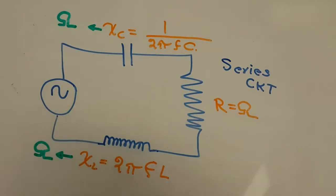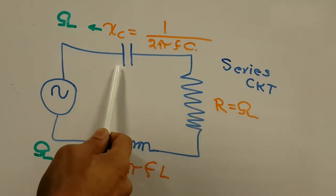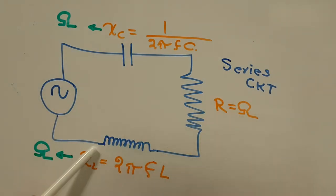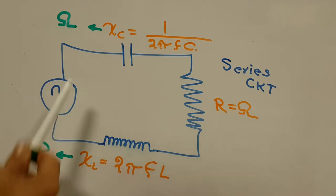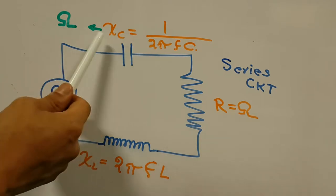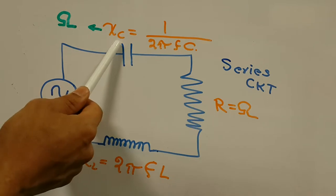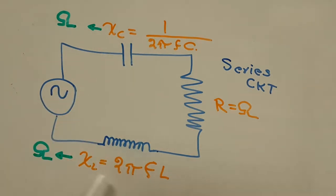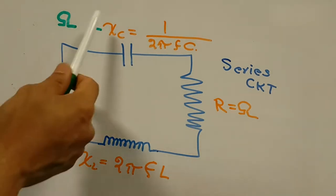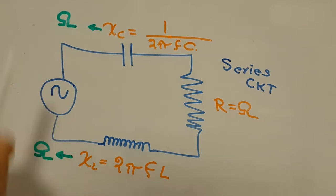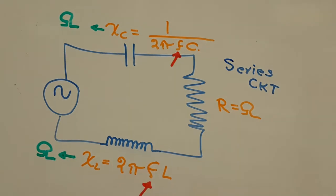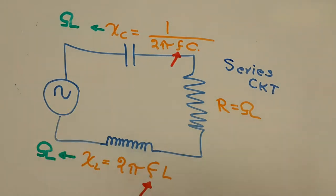We're going to start covering this series circuit where I have a capacitor, a resistor, and an inductor. I also provide here the formulas to calculate both capacitive reactance and inductive reactance — both are measured in ohms, along with resistance. The frequency applied to the circuit will be the same frequency for both the inductor and the capacitor.